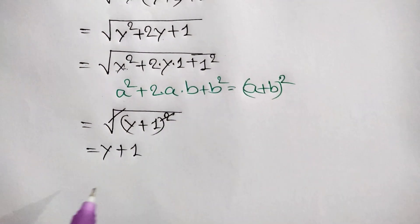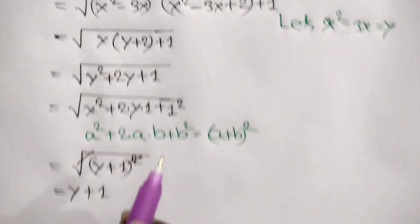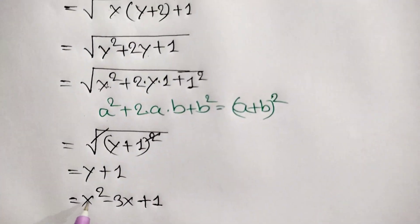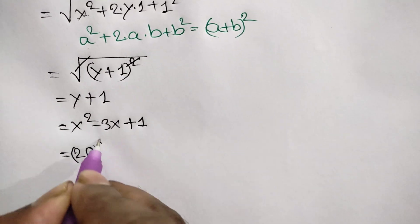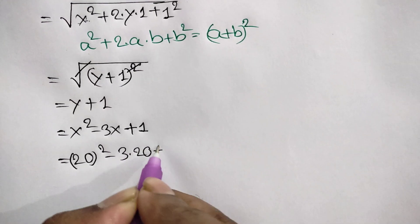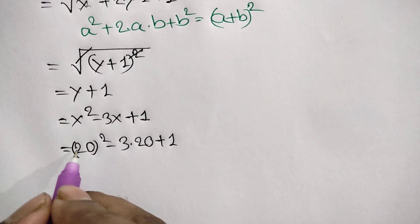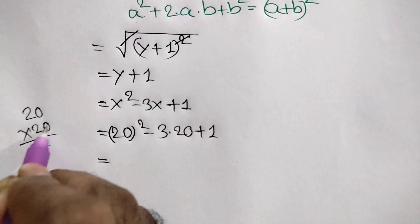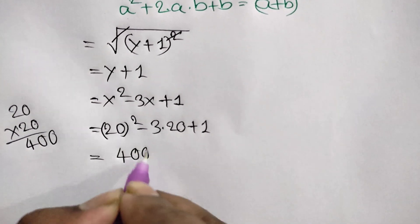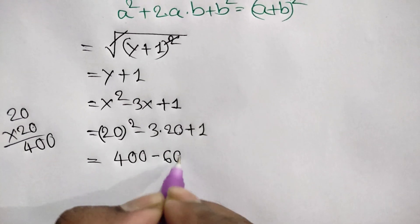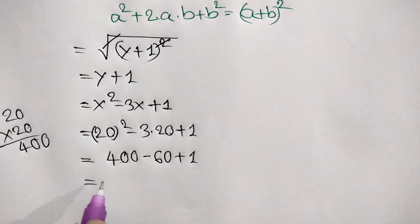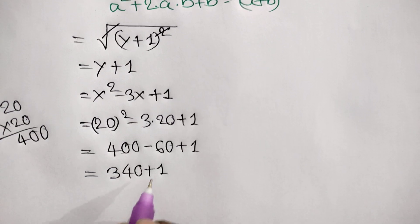Remember y equals x squared minus 3x, so the answer is x squared minus 3x plus 1. Since x equals 20, we get 20 squared minus 3 times 20 plus 1, which equals 400 minus 60 plus 1, which equals 341.